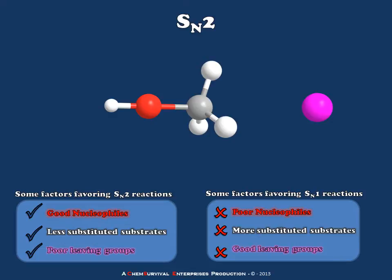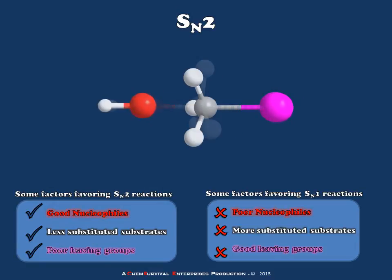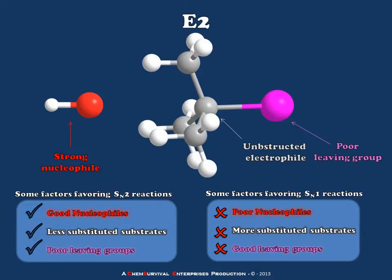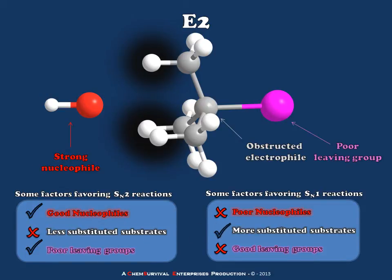But let's rewind this reaction and make one change. I'm going to change only the substitution of the electrophile — I've created what would essentially be t-butyl chloride, switching from an unobstructed to an obstructed electrophile. In doing so, I've changed one of the three conditions to favor SN1 instead of SN2. Now my conditions are conflicting: my nucleophile and leaving group are prime for SN2, but my substrate is prime for SN1.